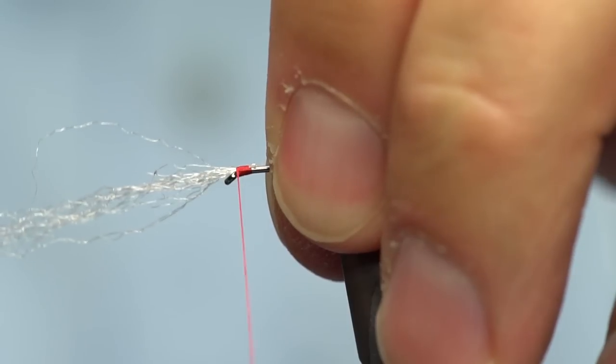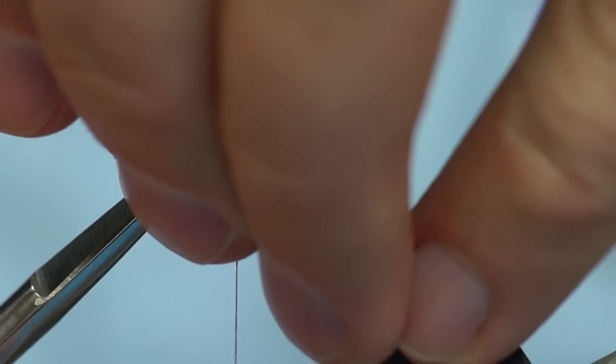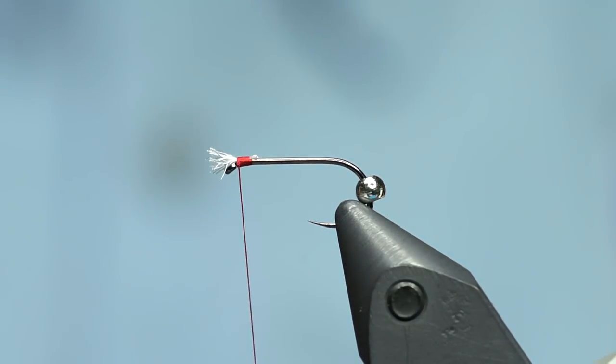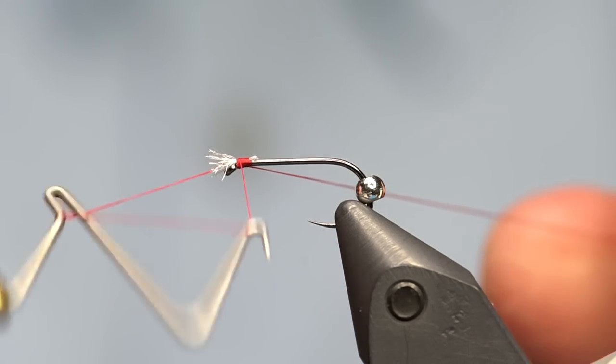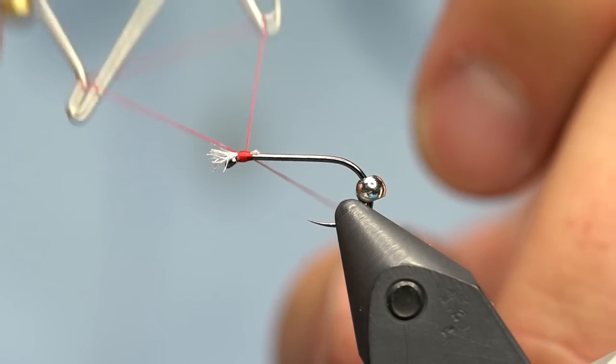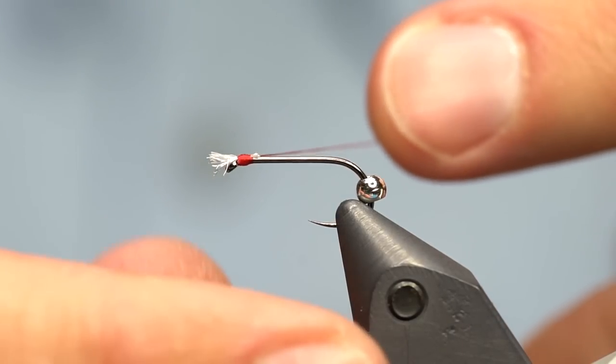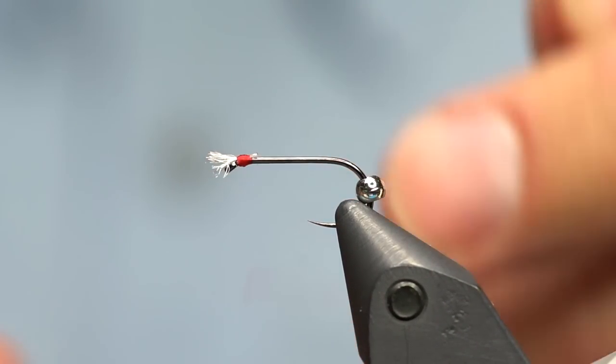I'll get a couple of wraps to hold it in place and then cover it up. Then trim it away so it's nice and short. You really don't even have to do that step if you want, but it makes people that study chronomids a little more comfortable with it because they do have gills. The fish probably don't care.